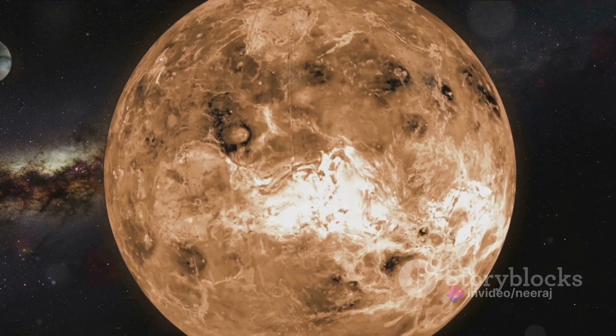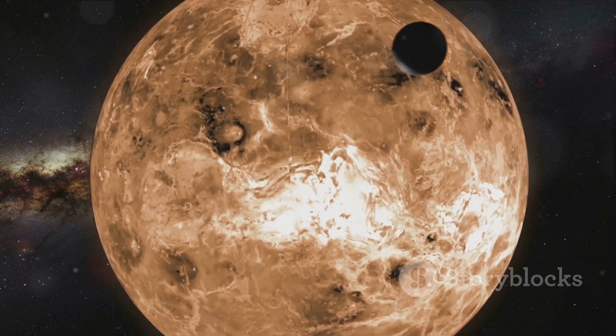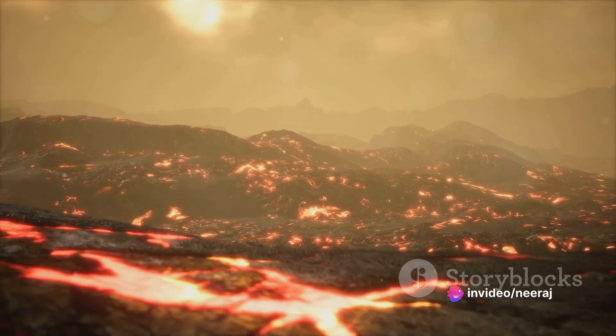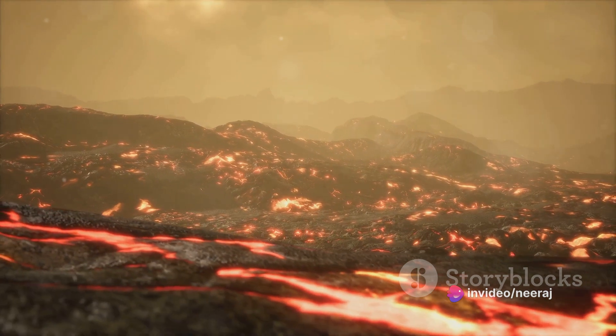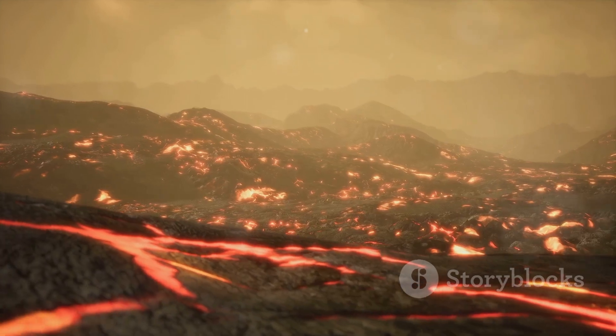So Venus isn't exactly a vacation spot. It's a place of extremes, a world of scorching heat, crushing pressure, and relentless volcanic activity. It's a testament to the diverse and often hostile environments that exist within our own solar system. Venus is a hot, high-pressure volcanic nightmare, a stark contrast to our cool, blue Earth.